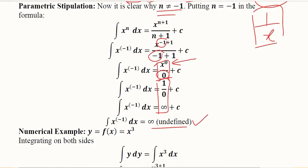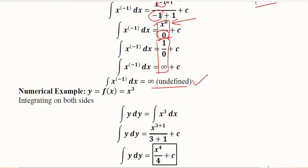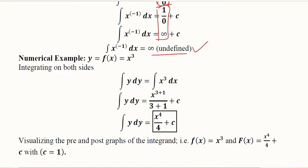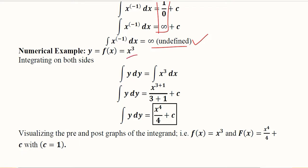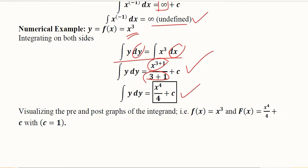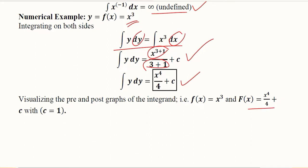So let's do a numerical example where n is not equal to minus one—something that can be solved using the power rule. x cubed is something we want to integrate. Here on both sides we have integrated: here we have dy, here we have dx. When we do this, x raised to the power 3 plus 1 and the new power divided, we get this answer which is very easy. We just have to solve this and we get the answer by using this formula.